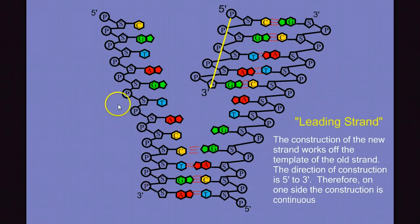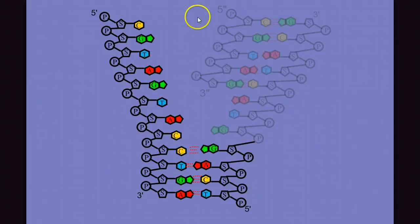But what about on this side? On this side, we can't build down following the zipper. Let's take a look at this side. On this side, we're going to have to build in the up direction from the five prime to the three prime. So you'll see we'll have to build upwards on this side.